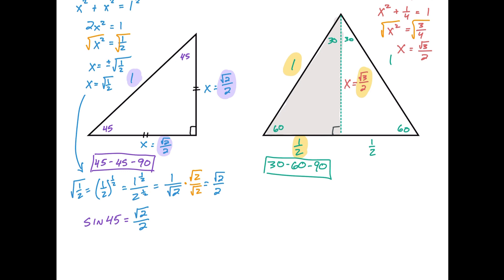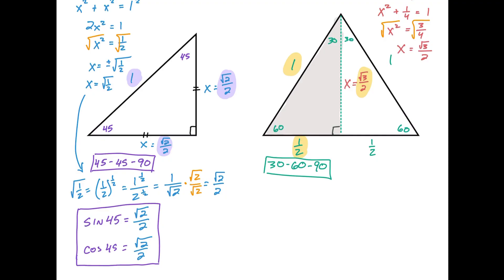And if I look at cosine of 45, cosine is the adjacent side over the hypotenuse — that's also going to equal √2/2. So here are two ratios that you will learn — you'll learn to love them or not love them — but these are values you're going to see regularly.